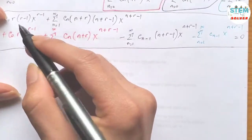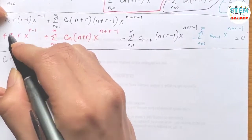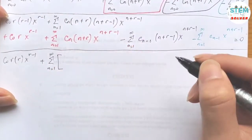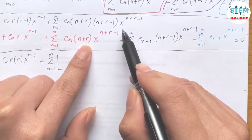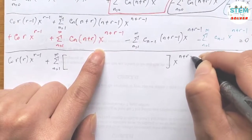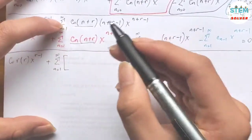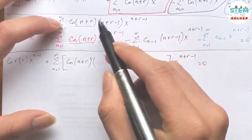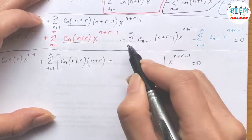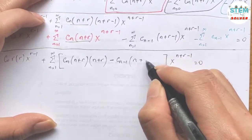Now we combine like terms. For the n=0 term, we get c_0 times (r−1+1), which gives r, times x to the r minus 1. For the series from 1 to infinity, factoring out c_n·(n+r), what remains is (n+r−1+1) which is (n+r), and factoring out c_{n−1} we are left with (n+r−1+1) which is also (n+r).